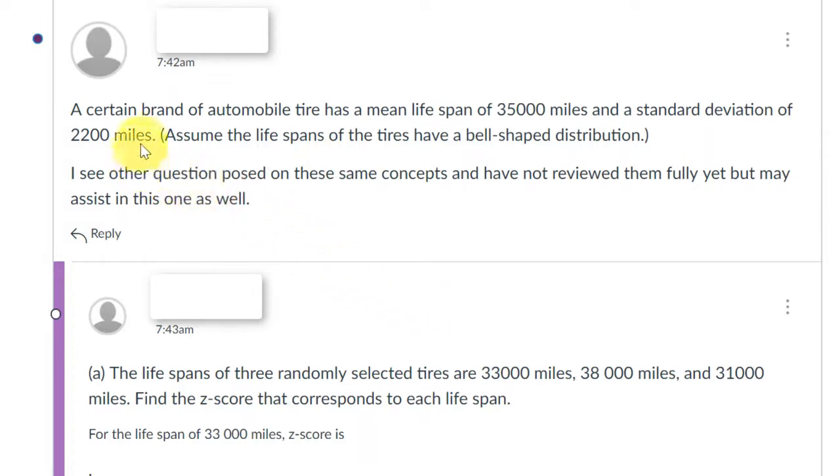The particular problem is about automobile tires, and we're given a mean lifespan of 35,000 miles for a certain brand. So we need to be sure to recognize that means this is a population mean mu of 35,000 and a population standard deviation sigma of 2,200 miles.